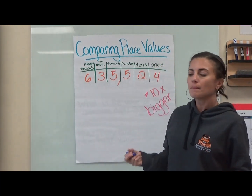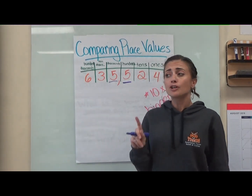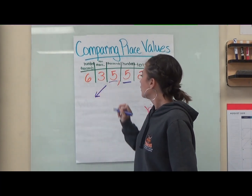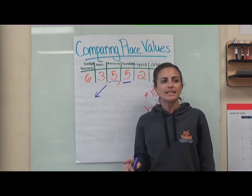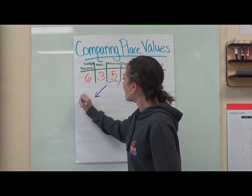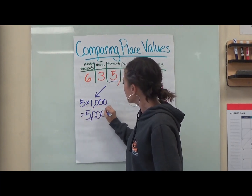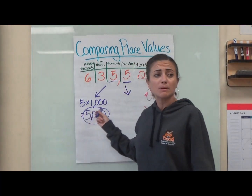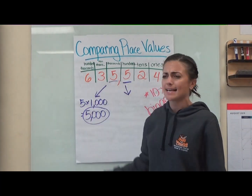So let's say I want to compare my five in the thousands place to my five in the hundreds place. First thing I want to do is figure out the values for each of them. What is the value for a five in the thousands place? Five thousand — because that's telling me I have five one-thousands. That equals a five-thousand value. Now, what about my other five? It's a whole different place value, so it can't be the same value.